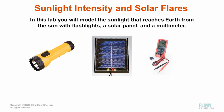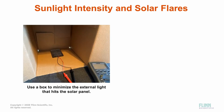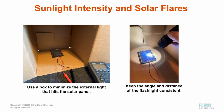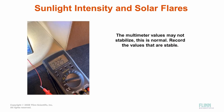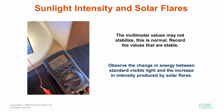In this lab, you will model the sunlight that reaches Earth from the sun with flashlights, a solar panel, and a multimeter. It is important to minimize the amount of light reaching the solar panel from the classroom — this can be done by placing the solar panel in a box. When using the different flashlights, be consistent in the distance and angle they are held with respect to the solar panel, as both angle and distance affect how much energy the panel absorbs. Also, be careful not to let your hand cast a shadow on the panel. The value on the multimeter is not likely to stabilize completely — this is normal, so simply record the values that are stable. You will observe the change in energy between standard visible light and the increase in intensity produced by solar flares.